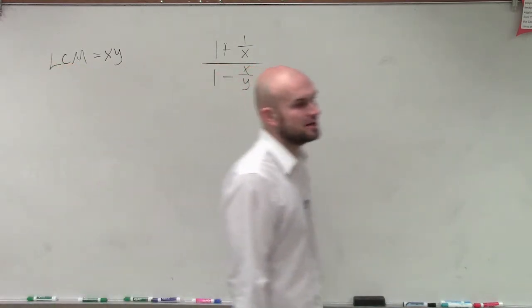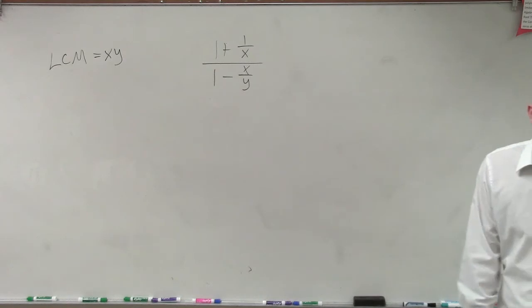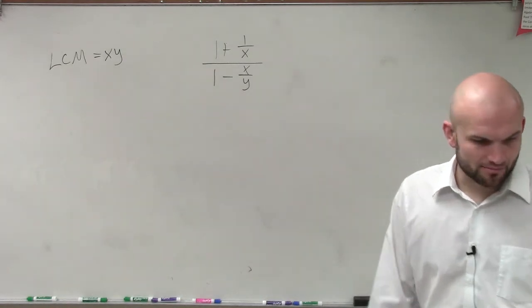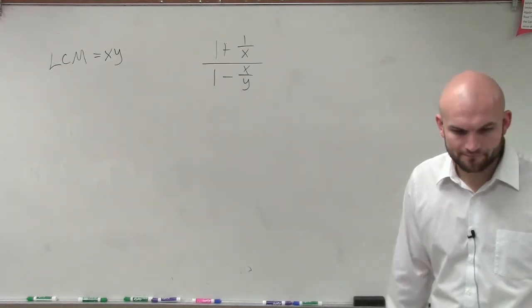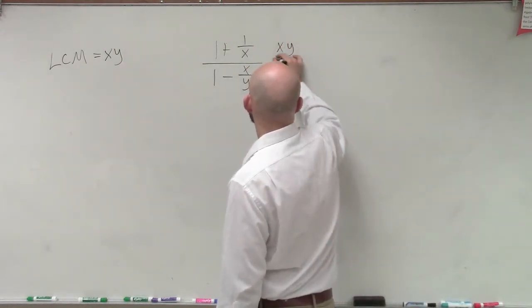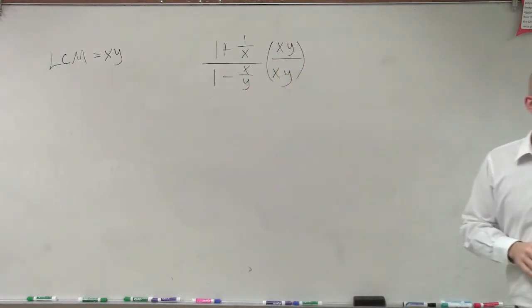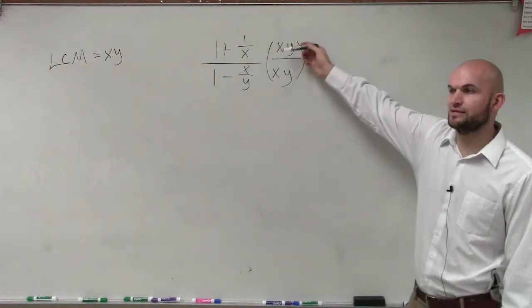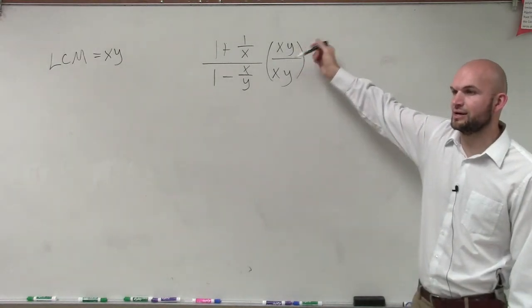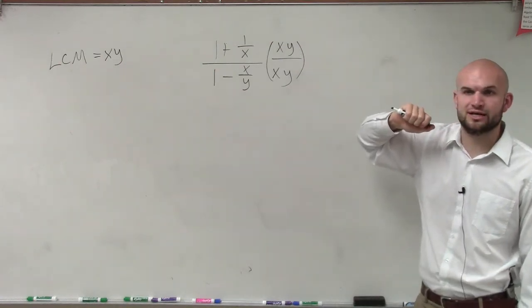So what I'm going to do is I'm going to multiply. What I want to do is I need to multiply my top and my bottom by x times y. Whatever your LCM is, you need to make sure that these are the same denominators. So you're going to multiply by xy times xy to make sure that you're going to get common denominators.